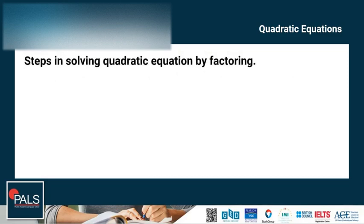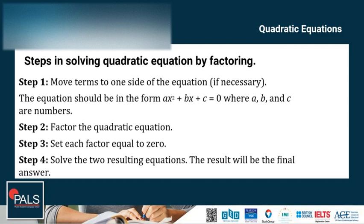Let's proceed to the steps in solving quadratic equations by factoring. Step 1: Move terms to one side of the equation if necessary — the equation should be in the form ax squared plus bx plus c is equal to 0, where a, b, and c are numbers. Step 2: Factor the quadratic equation. Step 3: Set each factor equal to 0. Step 4: Solve the two resulting equations — the result will be the final answer.